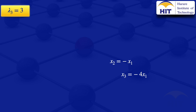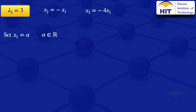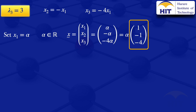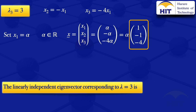We now have x2 = minus x1 and x3 = minus 4x1, both in terms of x1. Setting x1 = alpha, our vector x becomes: alpha, minus alpha, minus 4 alpha. Factoring out alpha gives alpha multiplied by (1, minus 1, minus 4). All other vectors are scalar multiples of this vector. Therefore, the linearly independent eigenvector corresponding to lambda equals 3 is (1, minus 1, minus 4).